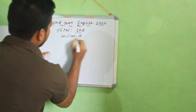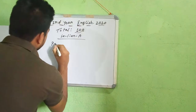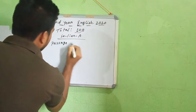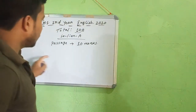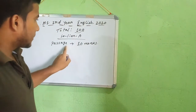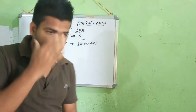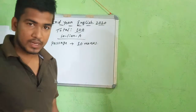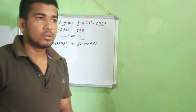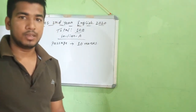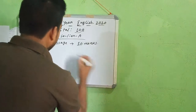Section A — English total hundred marks. Section A has 10 marks. Question number one in Section A is a passage worth 10 marks. Based on the passage you have to answer questions — paragraph-based questions. From the paragraph you get questions and you write answers for those questions. That is the basis: 10 marks for Section A.